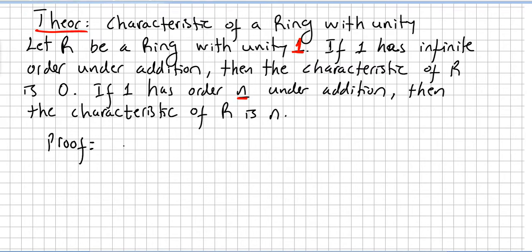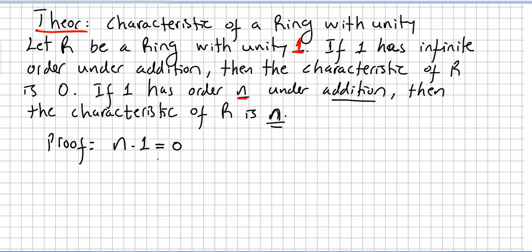The proof is really easy. We have a ring with unity 1. Either 1 has infinite order under addition, in which case the characteristic is 0, or 1 has order n under addition, in which case the characteristic is n. If 1 has infinite order, then there is no positive integer n such that n times 1 equals 0, because 1 has infinite order. So this means the ring has characteristic 0.